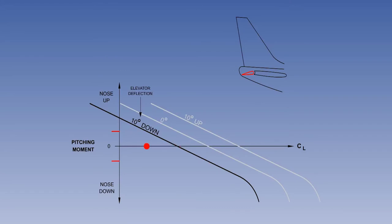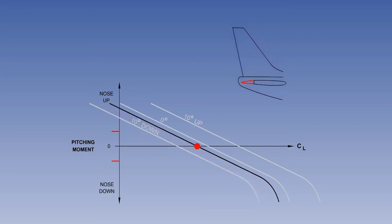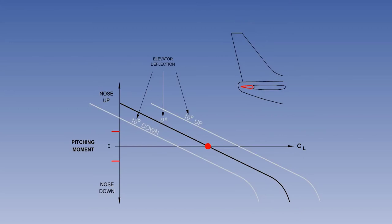A momentary decrease in angle of attack generates the same stabilising nose-up pitching moment. The illustration has shown that the same amount of static longitudinal stability will be obtained with the elevator at 10 degrees down, neutral, and 10 degrees up. Elevator position does not affect longitudinal static stability because only the change in lift is considered.